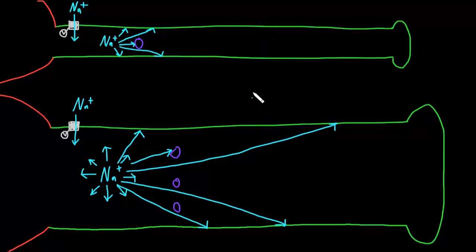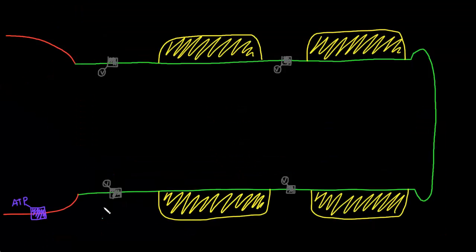At least this is the way I like to think about it. But now let's consider the other thing that really speeds up the conduction of action potentials down axons, which is the presence of a myelin sheath around the axon. The speed of action potential conduction is faster in myelinated axons, because the capacitance of the membrane is reduced in the myelinated segments.